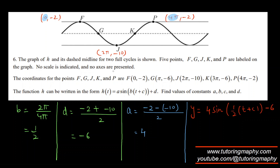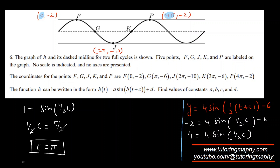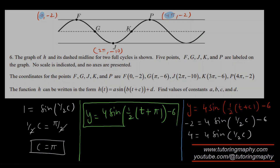Writing the equation: y = 4 sin(½t + C) − 6. Plugging in point F (t = 0, y = −2): −2 = 4 sin(½ · (0 + C)) − 6. Adding 6: 4 = 4 sin(C/2), so 1 = sin(C/2). Sine equals 1 when the angle is π/2, so C/2 = π/2, giving C = π. The final answer is y = 4 sin(½t + π) − 6.